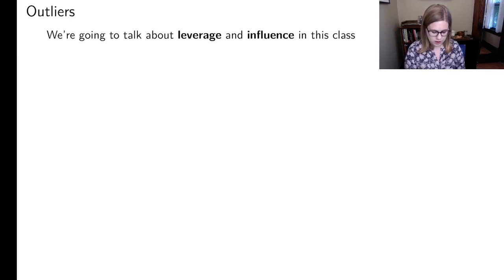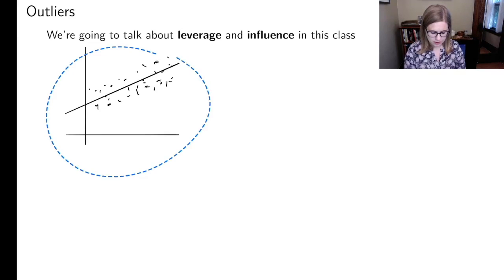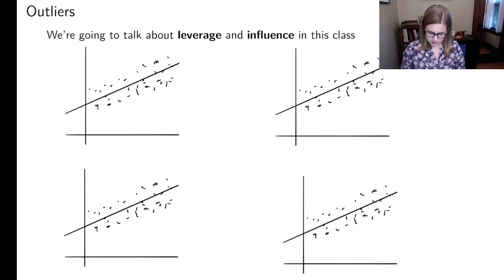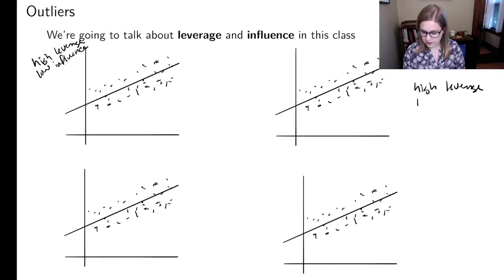So what I'm going to do is draw a regression line and a cloud of points. Let's say it is a sort of positive regression line. And there's my cloud of points. I'm going to copy this and paste it four times so that we have the same image to start. This one I'm going to call high leverage and low influence. And then this one is high leverage and high influence.